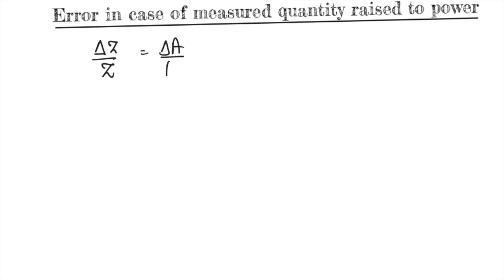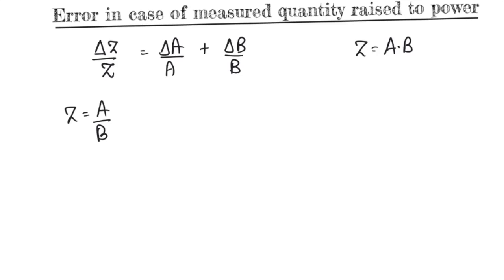Hello friends. In this session we will see error in case of measured quantity raised to power. Before that, let us revise the relative error for multiplication. So δz/z for multiplication z = a·b was δa/a + δb/b, and when z = a/b, we also have the same relative error: δz/z = δa/a + δb/b.